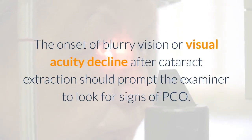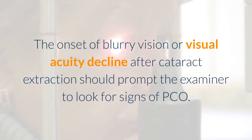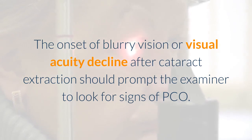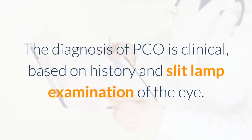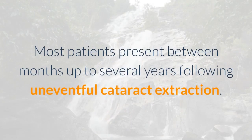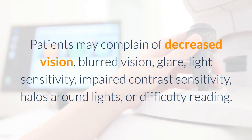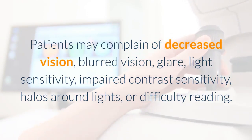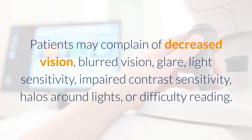The onset of blurry vision or visual acuity decline after cataract extraction should prompt the examiner to look for signs of PCO. The diagnosis of PCO is clinical, based on history and slit lamp examination of the eye. Most patients present between months up to several years following uneventful cataract extraction. Patients may complain of decreased vision, blurred vision, glare, light sensitivity, impaired contrast sensitivity, halos around lights, or difficulty reading.